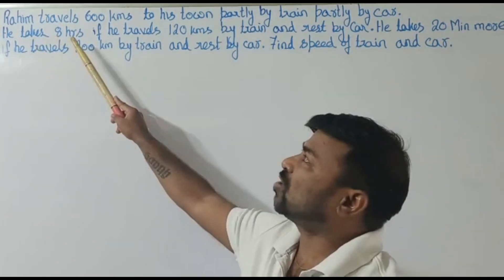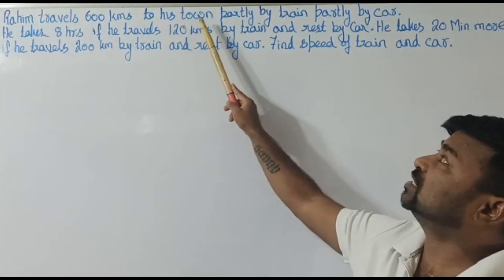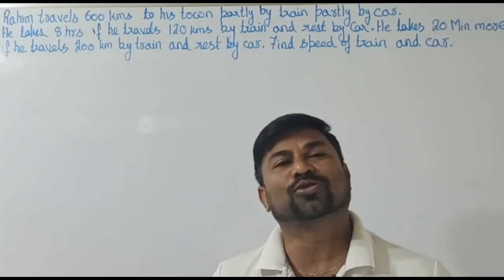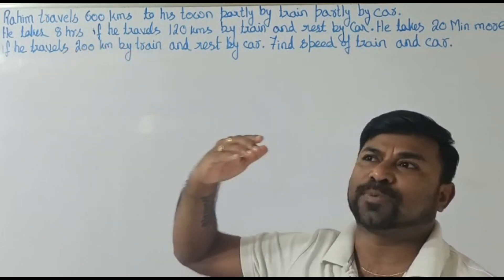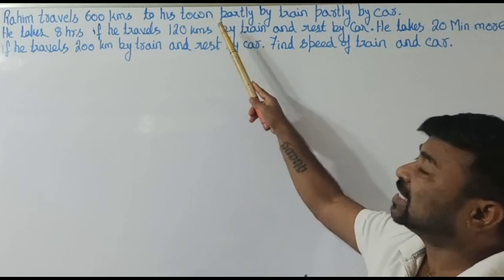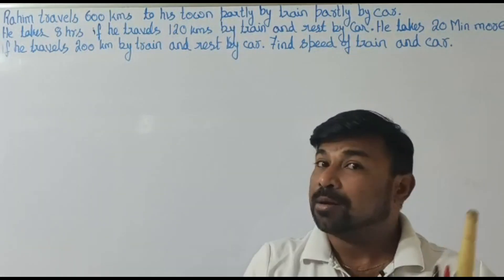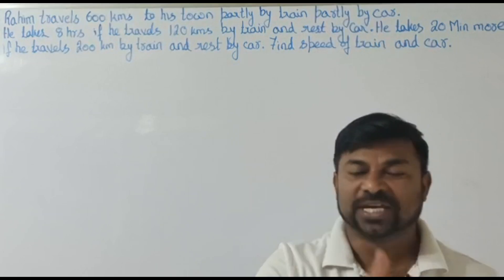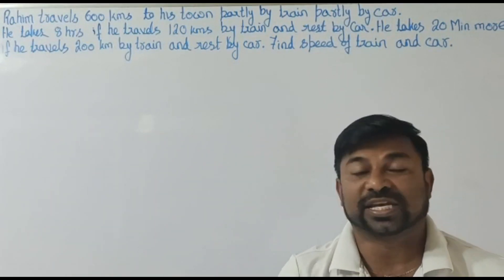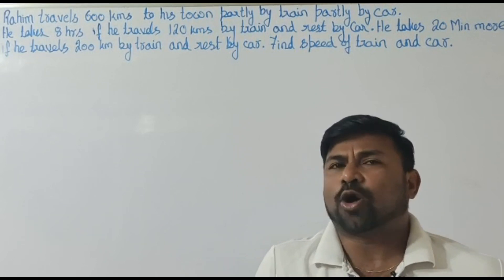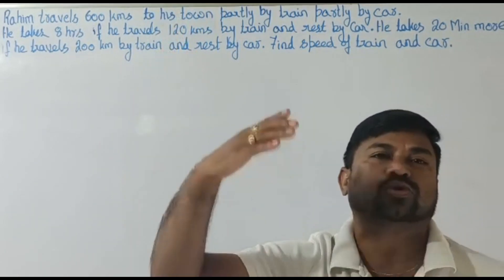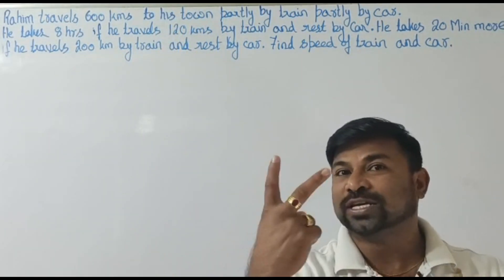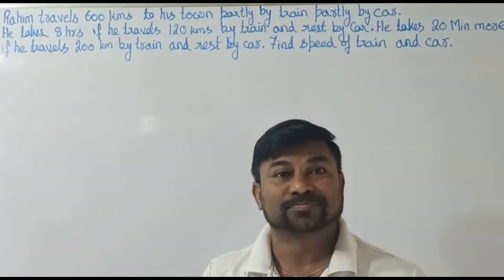Let's look at the sum: Raheem travels 600 kilometers to his town, partly by train and partly by car. He is planning to go to his town but cannot travel in a single vehicle. He has to take a train till a certain place, and from there onwards travel to his town by car. So he has taken two modes of transport.